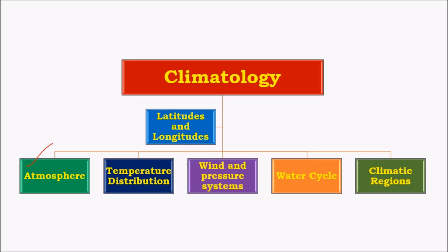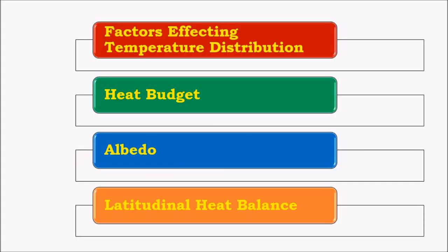In climatic regions, we'll see about different climatic and biotic regions — important ones like equatorial region, desert or arid climatic regions, Mediterranean regions, etc. In today's video, I'll be explaining about factors that affect temperature distribution on earth, what is heat budget, the important concept of albedo, and finally latitudinal heat balance.